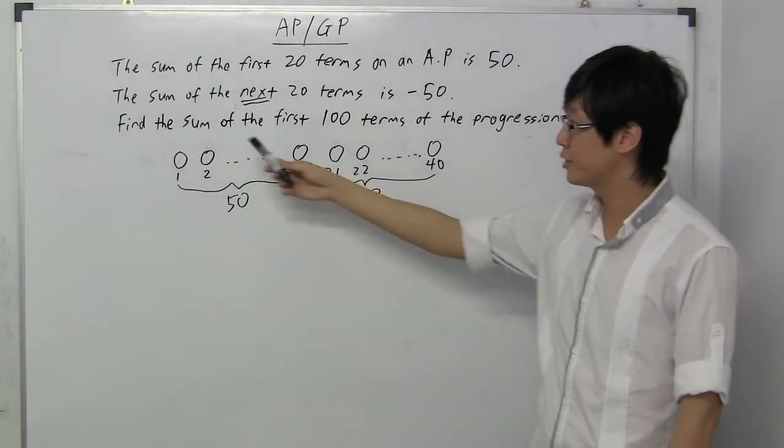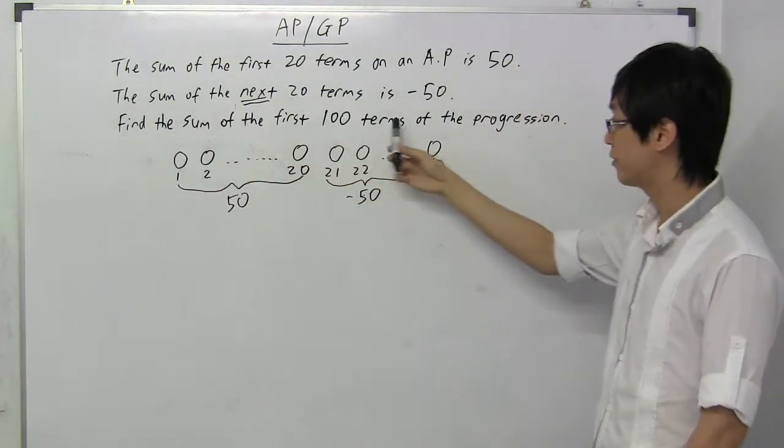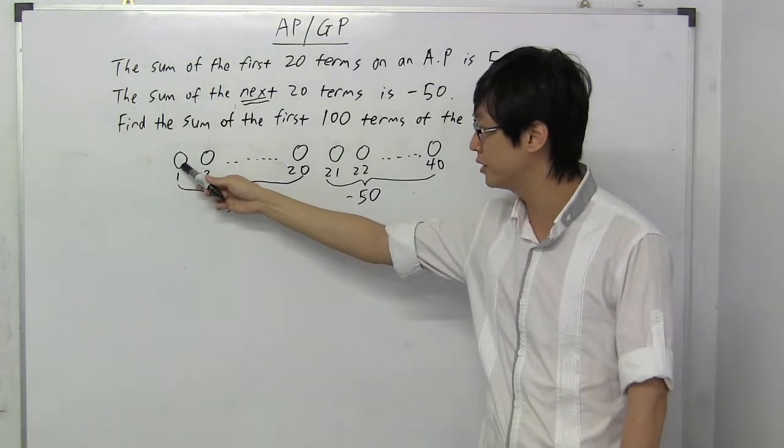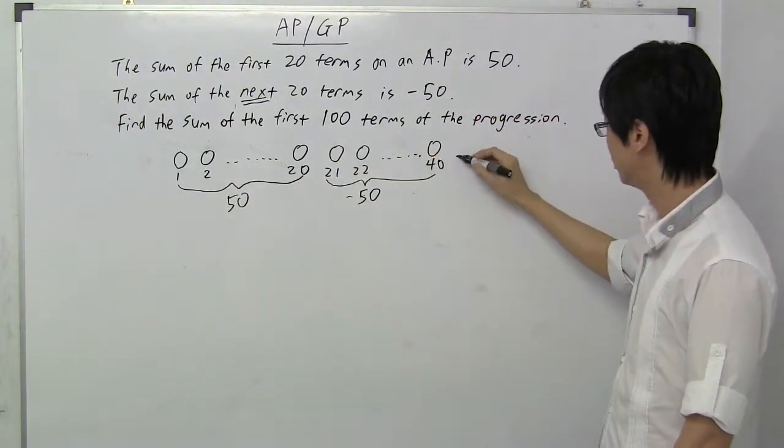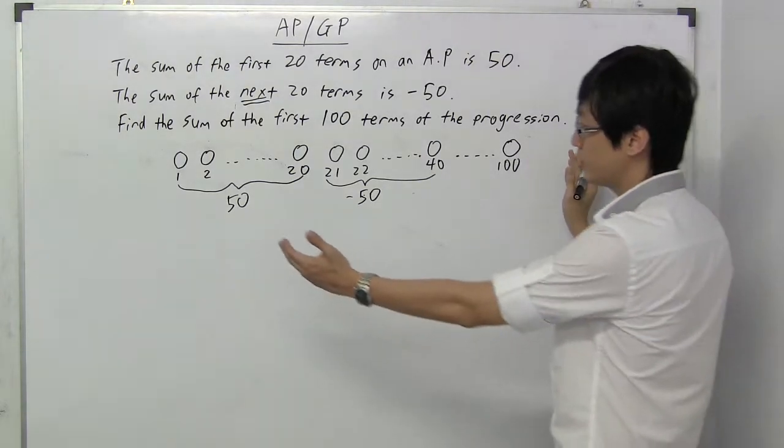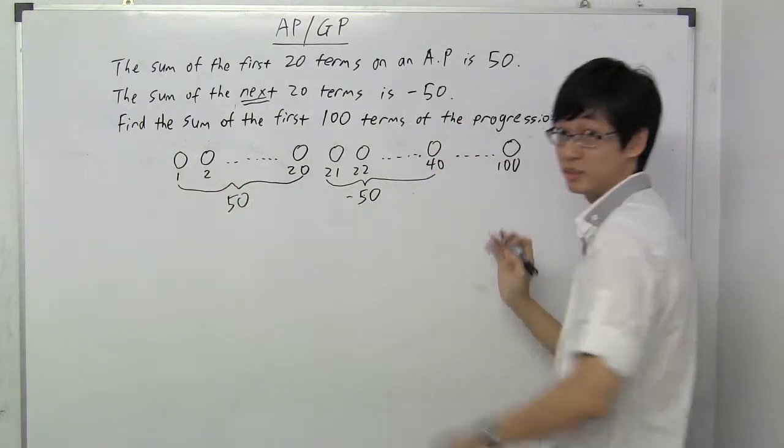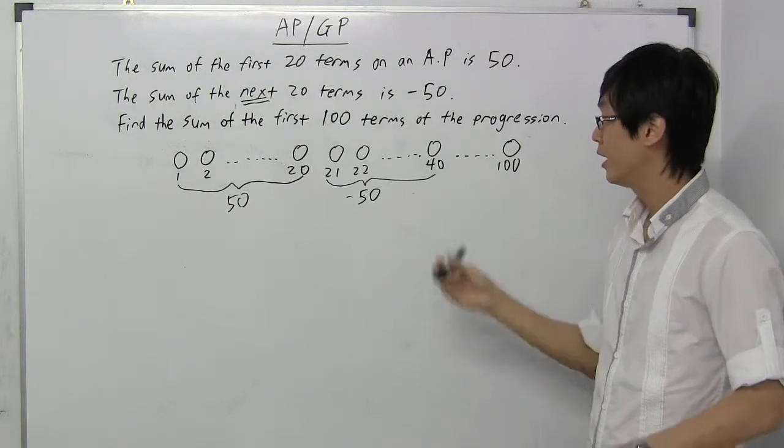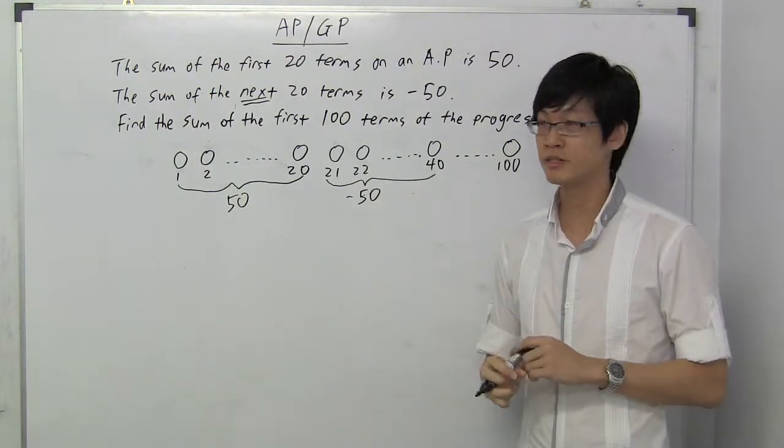And finally the question is, find the sum of the first 100 terms. In other words, they want you to find the sum from here all the way to here, 100. The question wants you to find the sum of the total terms here. And so, how do we solve this question?